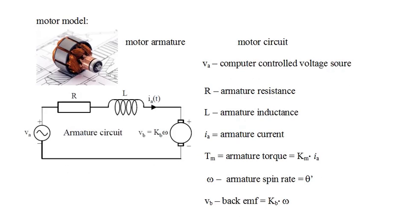We start with the wheel drive motor. The motor itself consists of a casing and an enclosed rotor. A typical electric motor armature is shown. Electric current through the winding of the rotor creates a magnetic field around the rotor that interacts with the fixed magnetic field of the casing, creating a torque on the rotor.